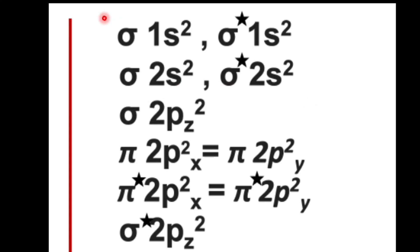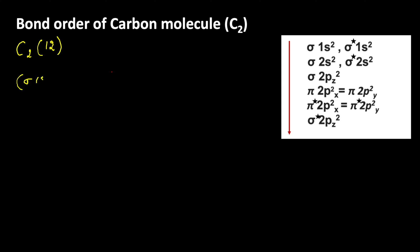Using this information, let us write the electronic configuration of carbon molecule: sigma 1s², then after that sigma star 1s², then the electron enter into sigma 2s²,